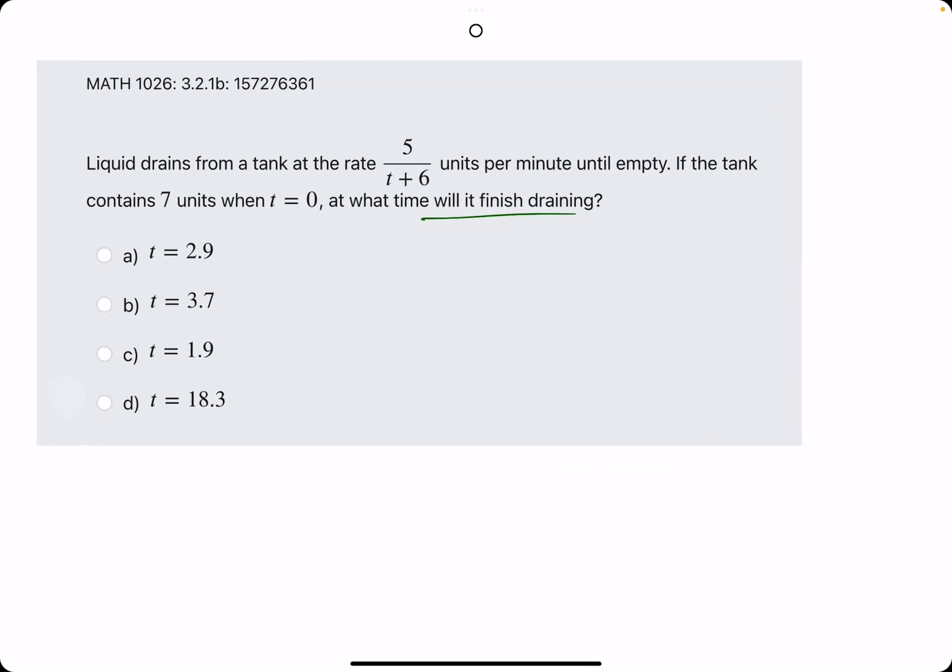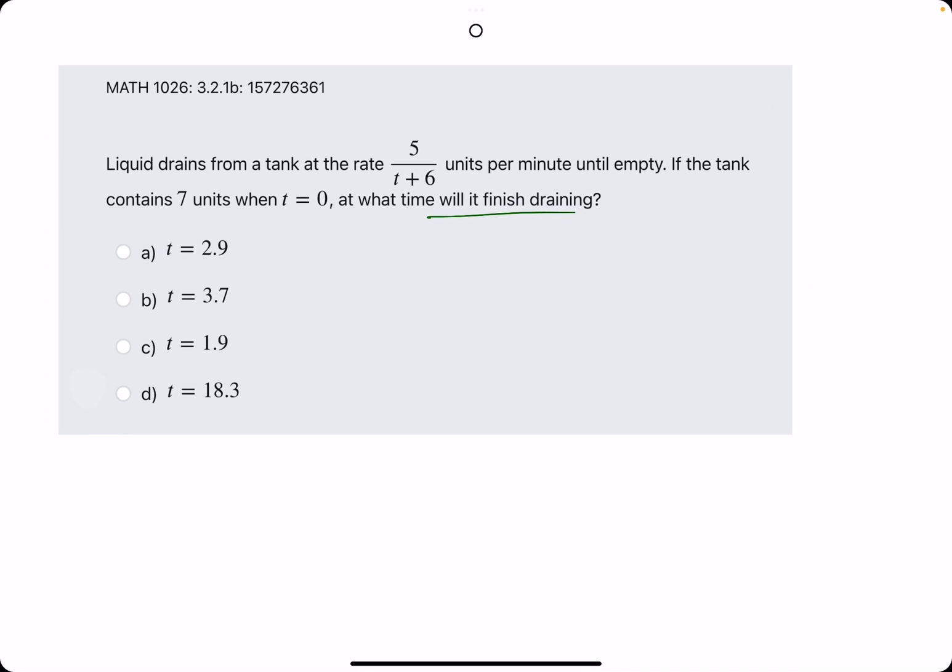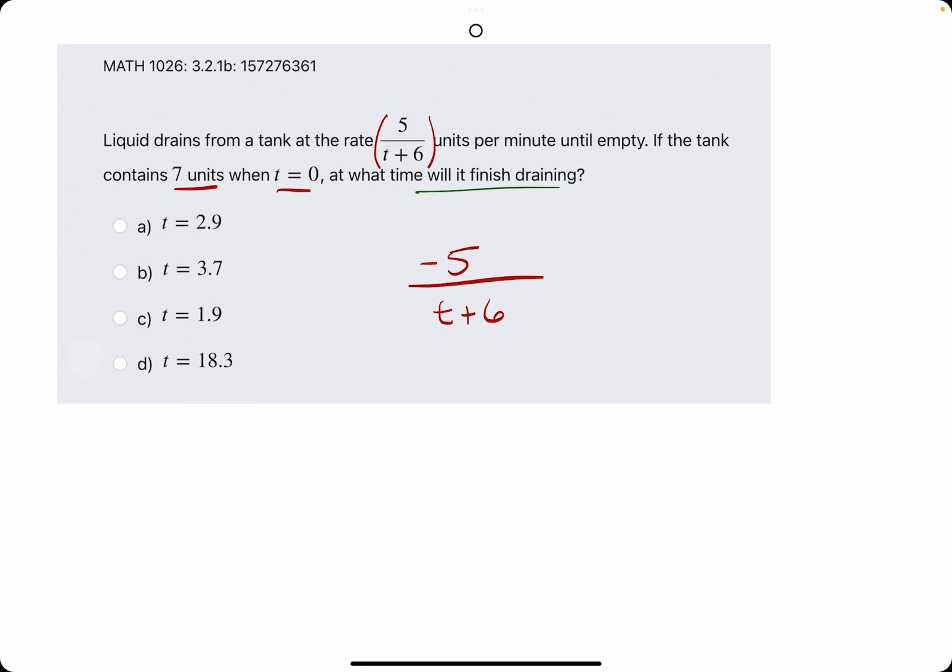In this one, liquid drains from a tank at this rate, meaning that it's leaving the tank. It's draining from the tank from the initial seven that are in there at time zero. If this is a rate of change describing the water leaving the tank, it's describing a negative rate of change because it's leaving the tank.